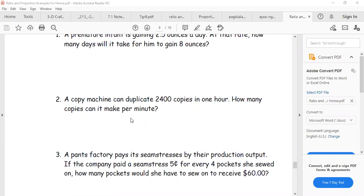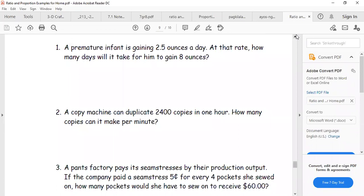So let's have number one. A premature infant is gaining 2.5 ounces a day. At that rate, how many days will it take for him to gain eight ounces? So again, when we say proportion, tapat-dapat in your solving word problem. A premature infant is gaining 2.5 ounces a day. So it means it's only one day, because of the article A. So it's equal to one. Tapat-dapat, 2.5 ounces is equivalent to one day.